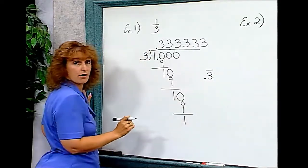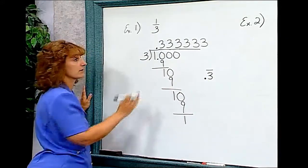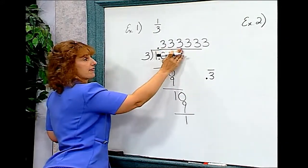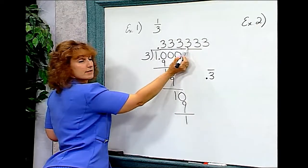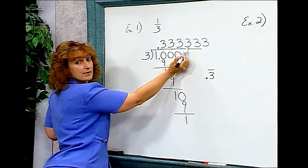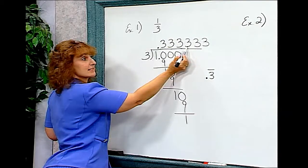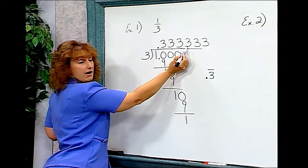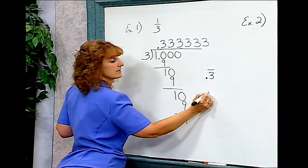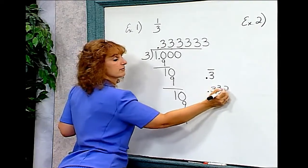If you would like to round it off to the nearest thousandth—tenth, hundredths, thousandths—we're going to look at the number in this place, the ten-thousandths column. Since that's lower than five, we could round it to .333.